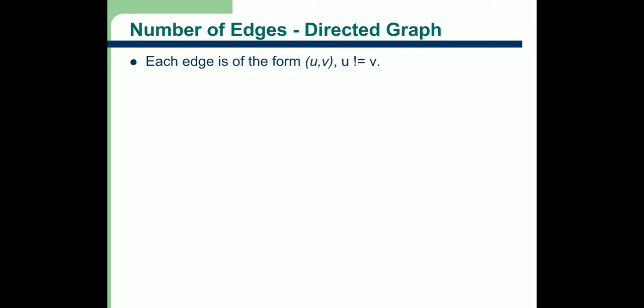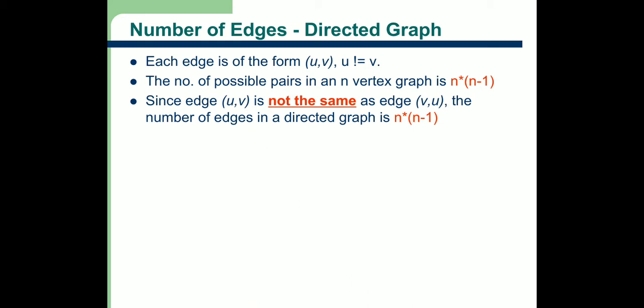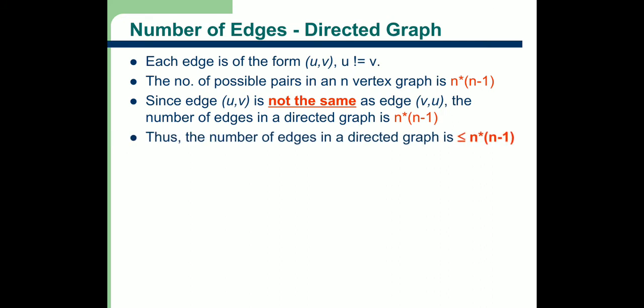Now we will discuss the number of edges in a directed graph. Each edge is of the form (u, v) where u is not equal to v. The number of possible pairs is n(n-1), but now in a directed graph, each edge is different from the other. Edge (a, b) is a different edge from edge (b, a). Therefore, the number of edges in a directed graph is less than or equal to n(n-1).